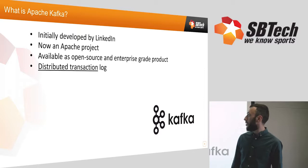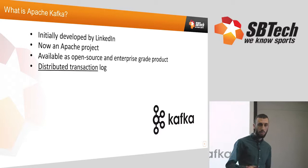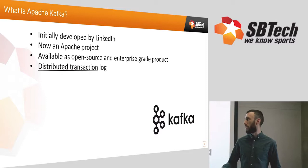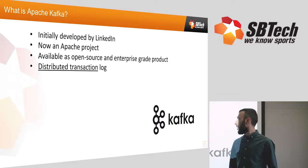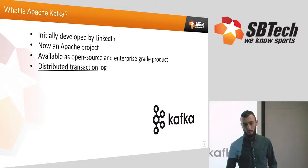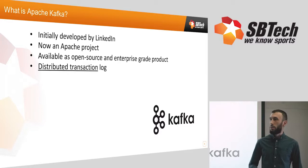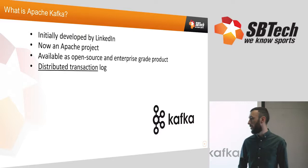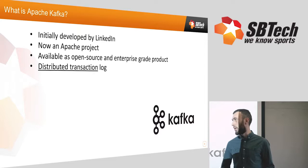Apache Kafka is software developed initially at LinkedIn, used to send messages from producers and consumed by consumers — other applications. It's an open source project under Apache, available as an open source product and as an enterprise offering with additional support from a company called Confluent, which was spun off by people who originally worked at LinkedIn. Kafka is a distributed transaction log, meaning you write to it and later at some point you read whatever you wrote there as a consumer.